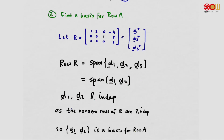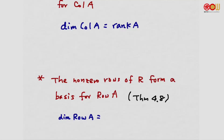Similarly, when finding a basis for the row space of A, we observe that the non-zero rows of R are linearly independent and form a generating set. So the non-zero rows of R form a basis for the row space of A — this is also stated in Theorem 4.8. The dimension of the row space equals the number of non-zero rows of R, which is also the rank of A.